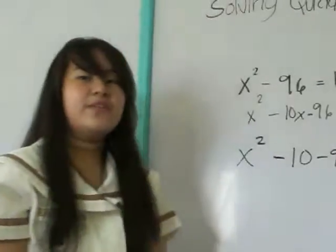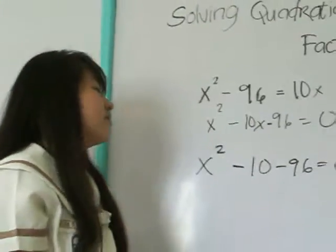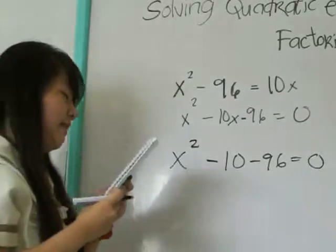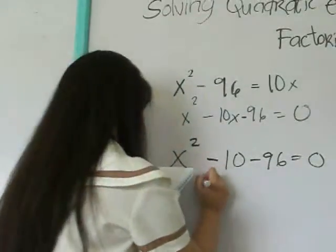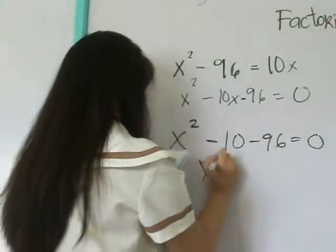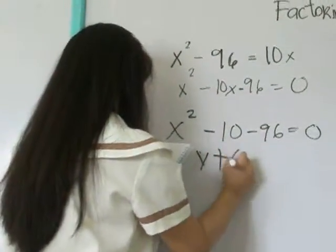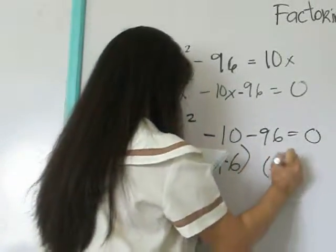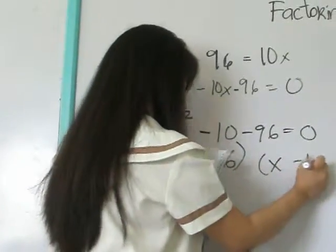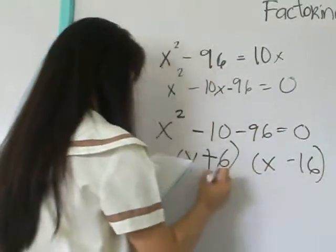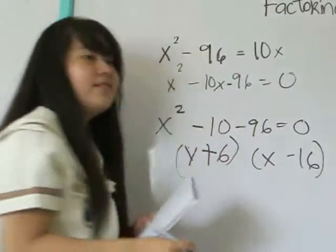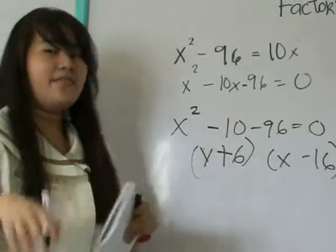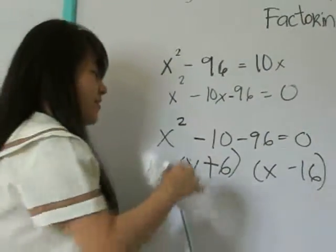We're going to find the factors of 10x and like terms. Then, we're going to use the FOIL method to factor.